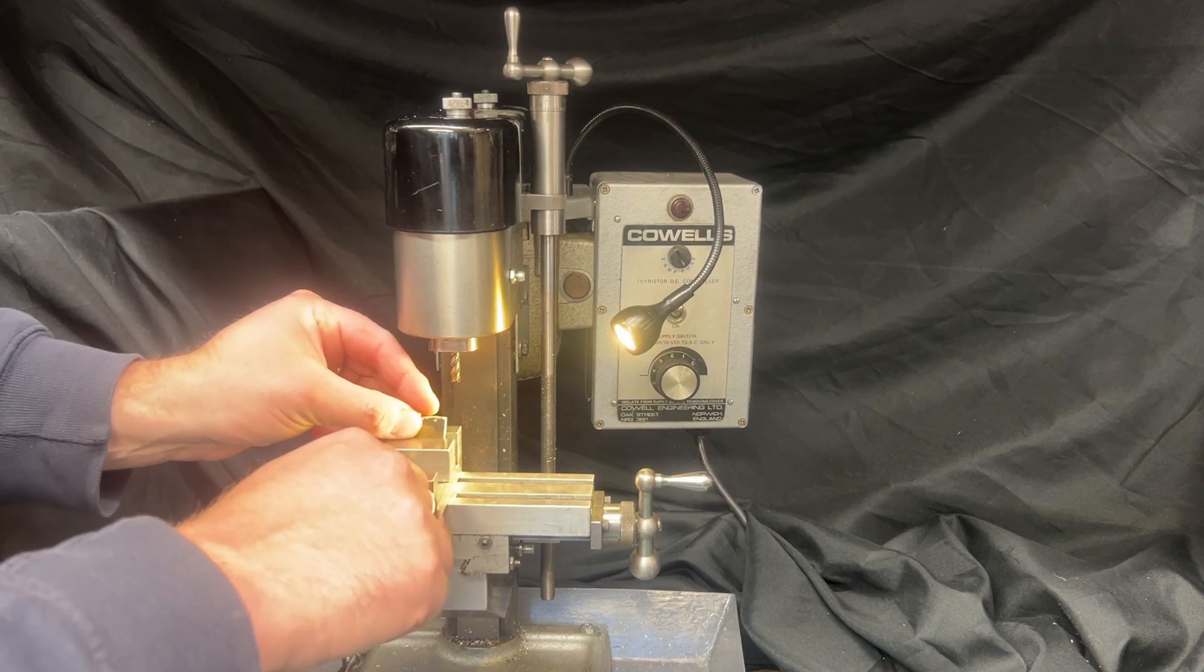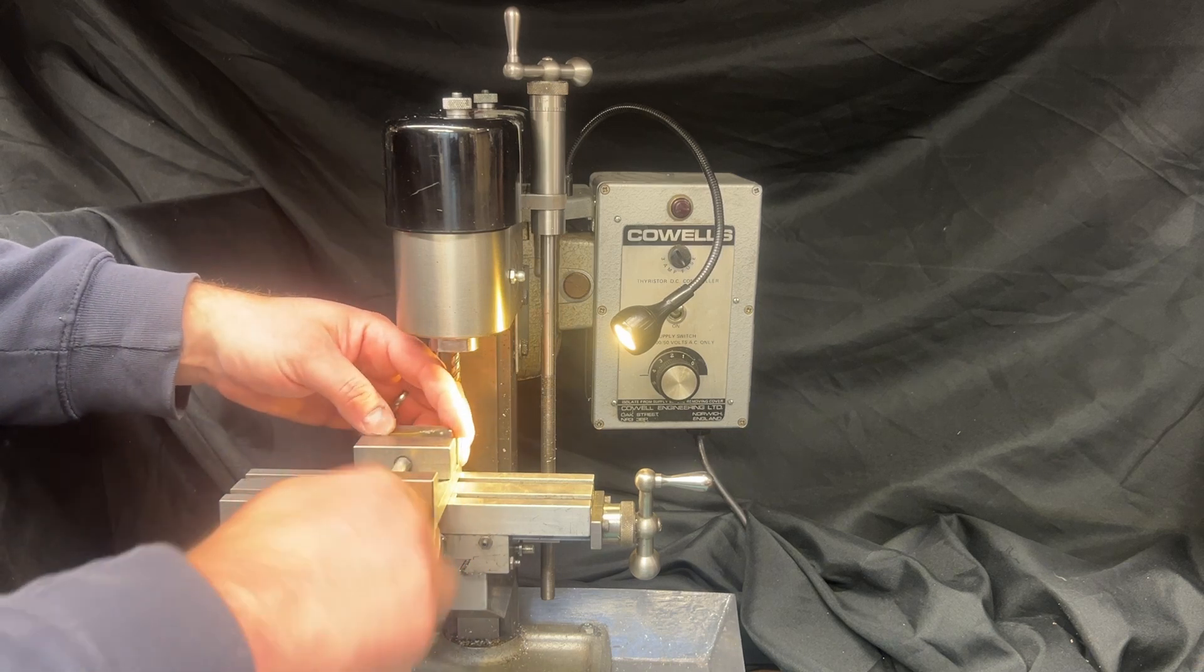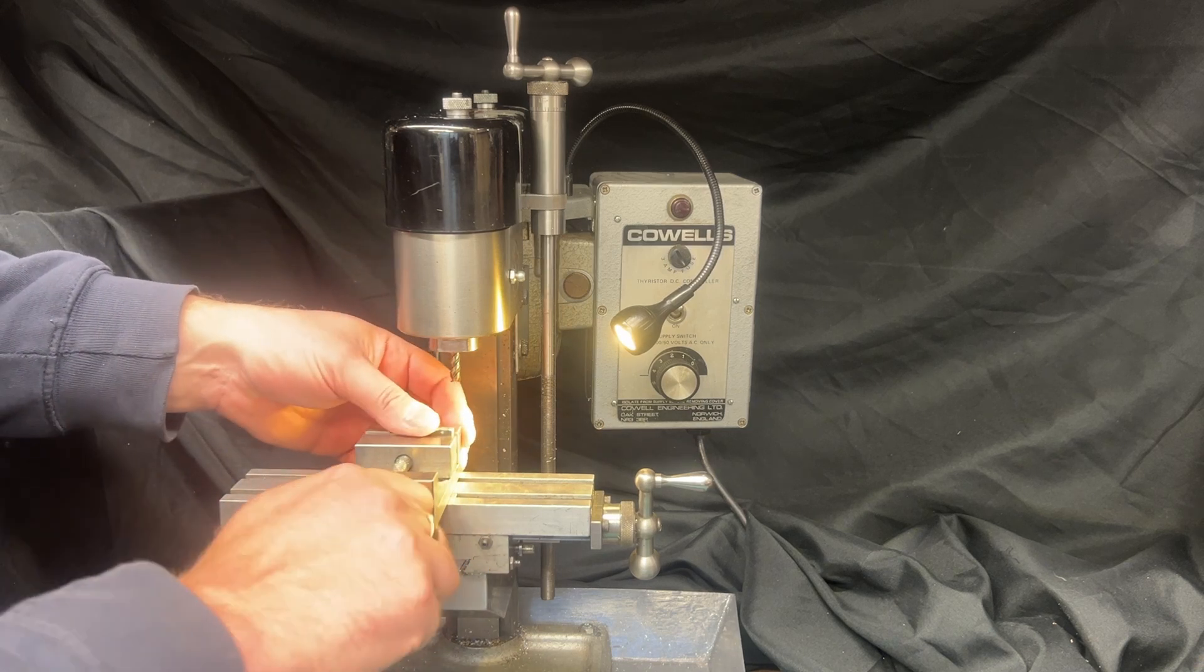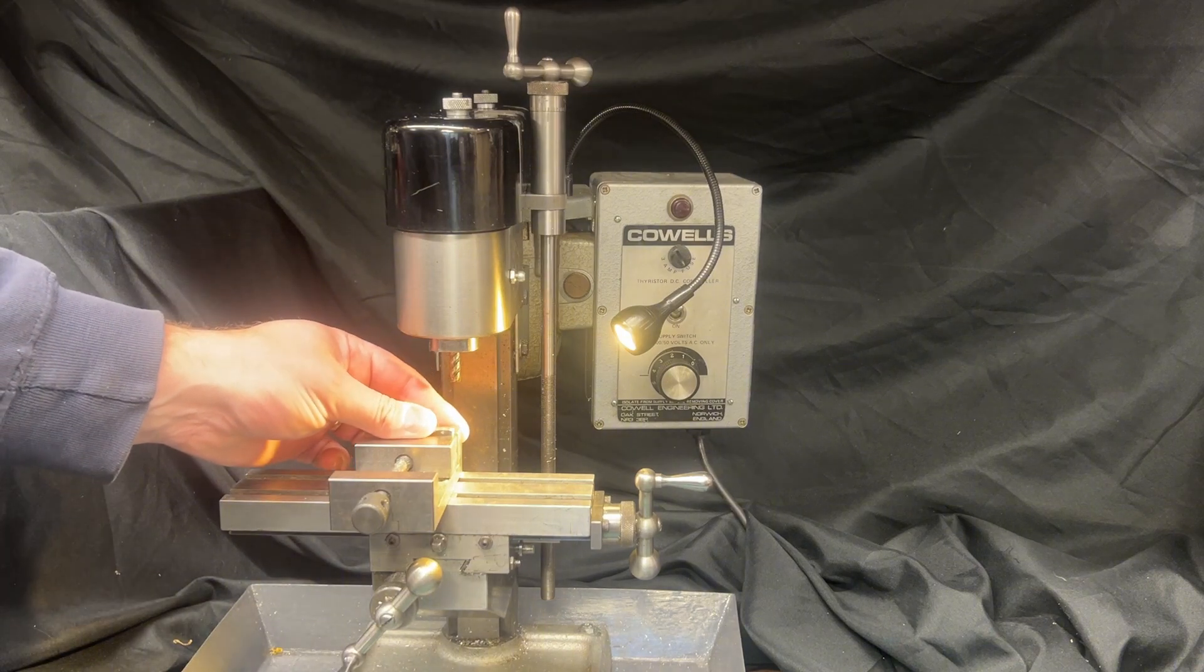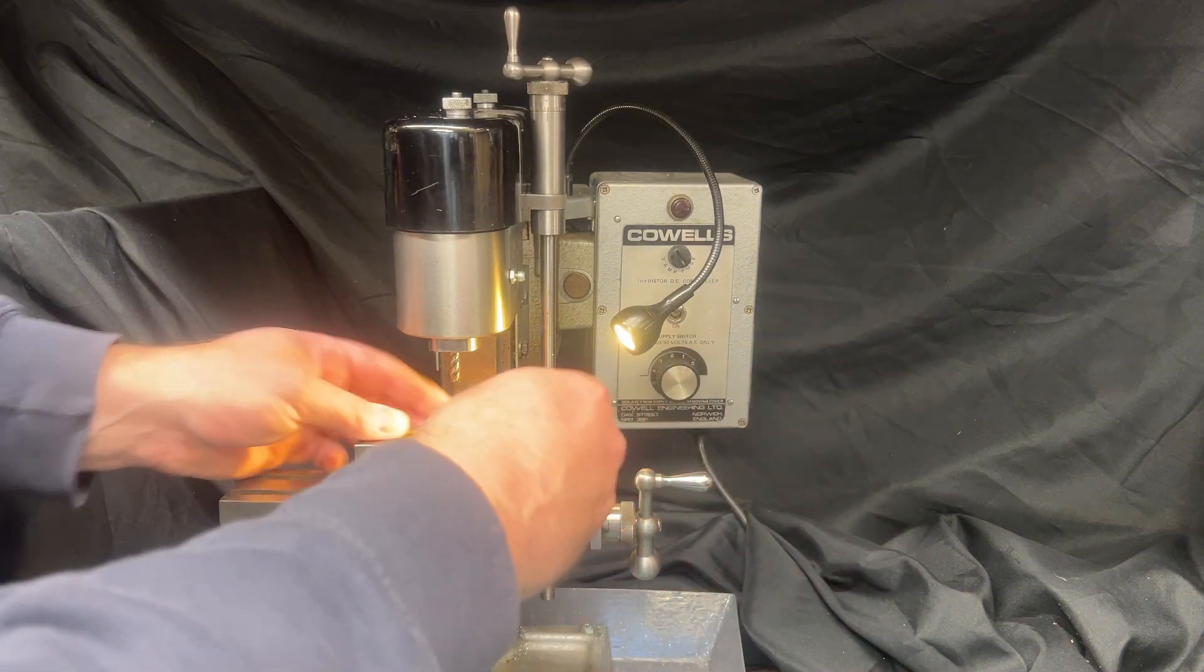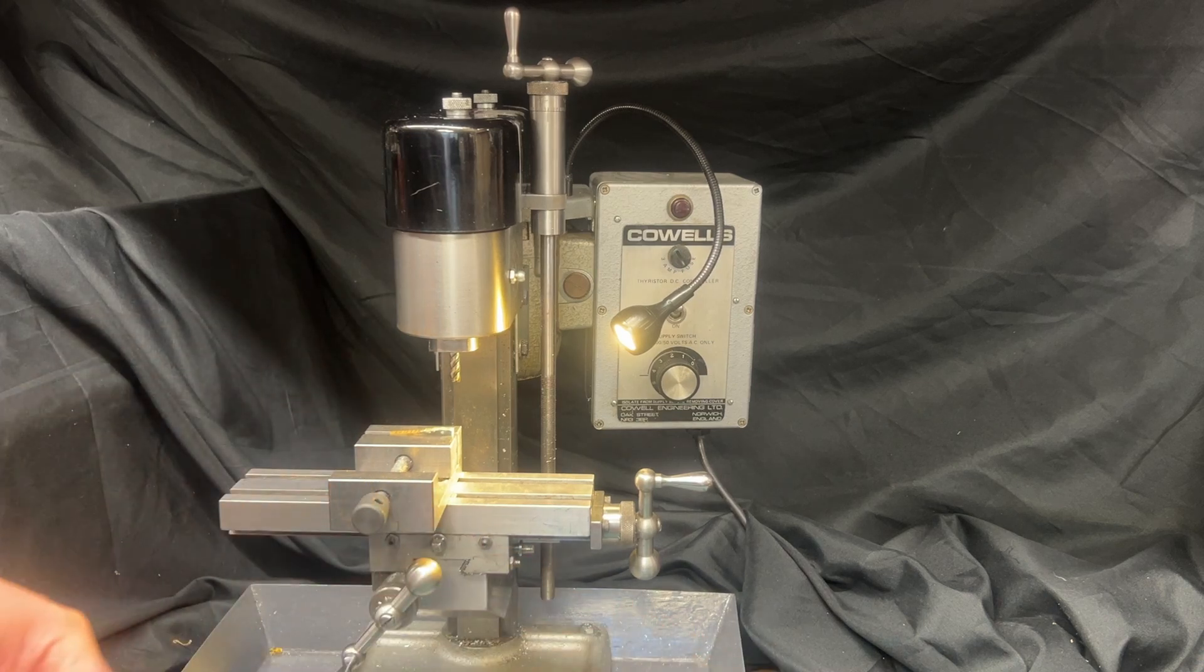But the omission is intentional I presume, and Cowles has kept things simple and solid to prioritize rigidity and accuracy and when you start to use it you can see why. It's designed for slow deliberate high precision work, not high speed production milling.